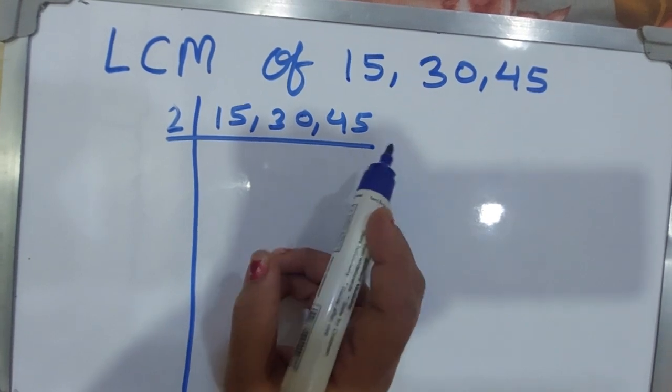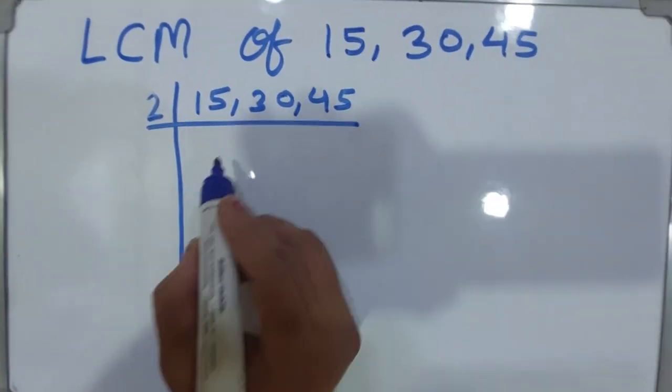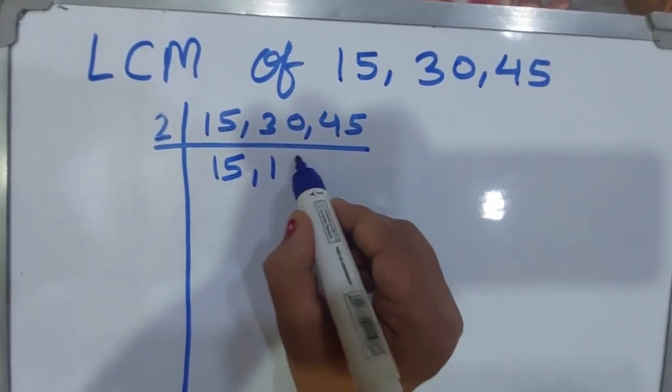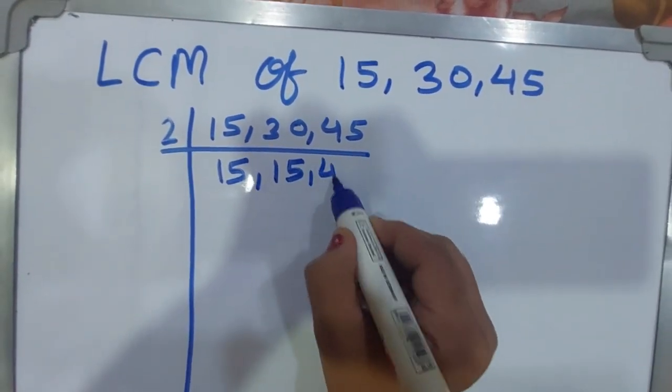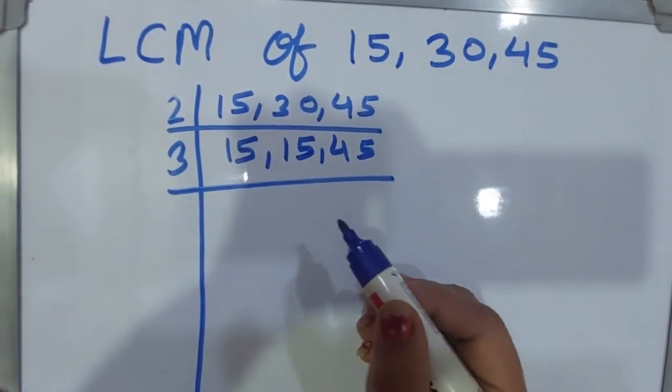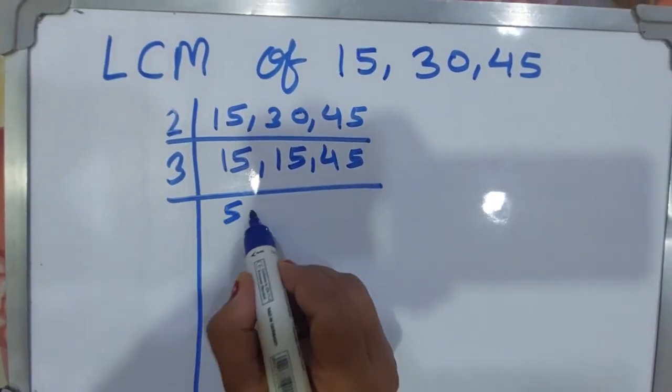Then you can write 15 as it is, 2 goes into 30 fifteen times, so two fives are 10, and 45 as it is. Now you can take the another prime number, 3. 3 goes into 15 five times, 3 goes into 15 five times, 3 goes into 3 one time, and 3 goes into 15 five times.